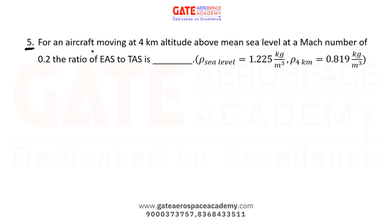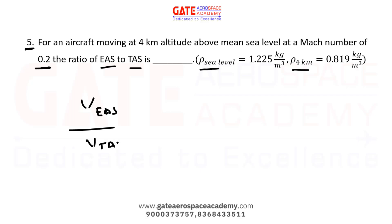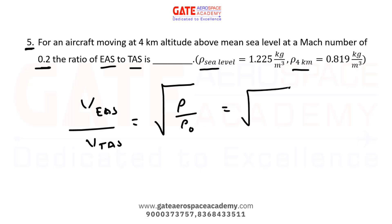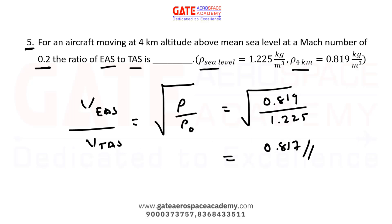Next question: for an aircraft moving at 4 km altitude above mean sea level at Mach 0.2, find the ratio of equivalent airspeed to true airspeed. Density at sea level is 1.225 kg/m³ and density at 4 km is given. The ratio V_EAS / V_TAS = √(ρ / ρ₀) = √(0.819 / 1.225) = 0.817. So 0.817 is the correct answer.